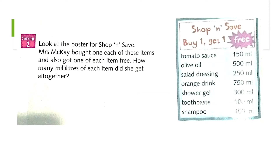Now let's move to Challenge Two. You can see a poster on the right: 'Shop and Save — Buy One Get One Free.' Mrs. Mackay bought one each of these items, meaning she bought only one quantity of each. Because of the buy-one-get-one-free deal, when she bought tomato sauce she got another for free, and when she bought olive oil she got another olive oil for free.